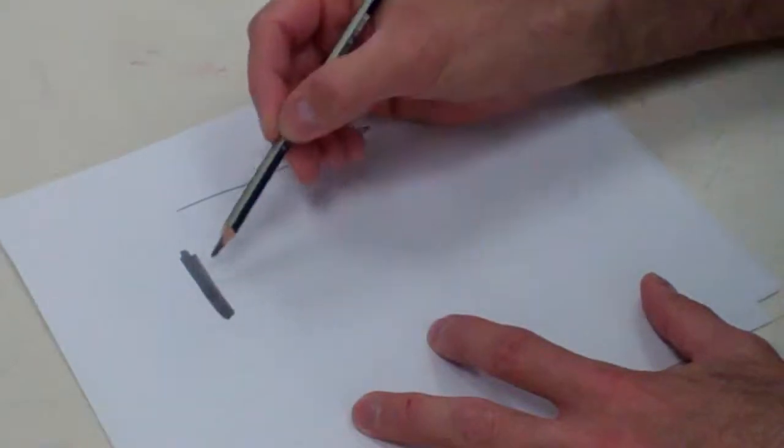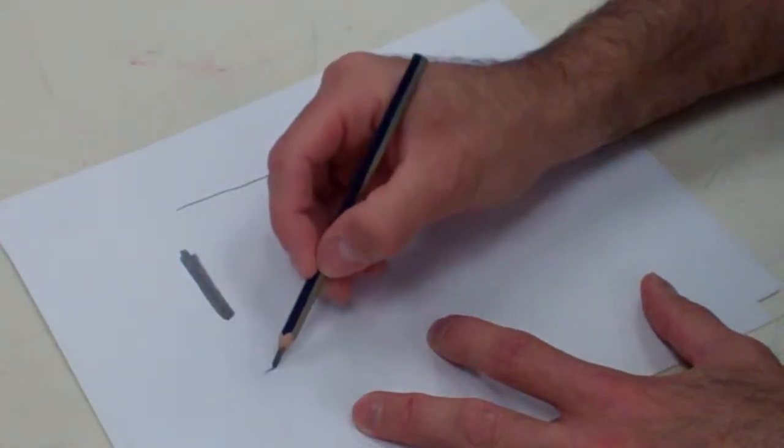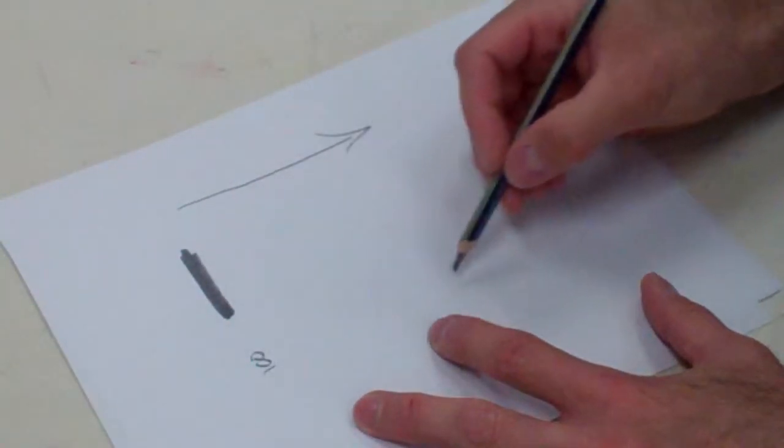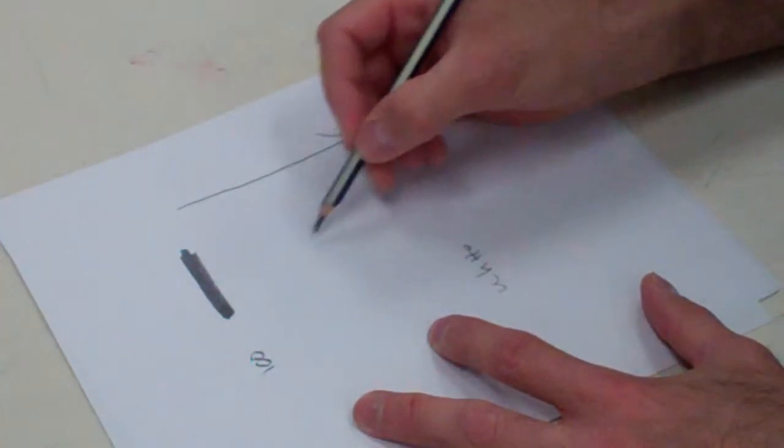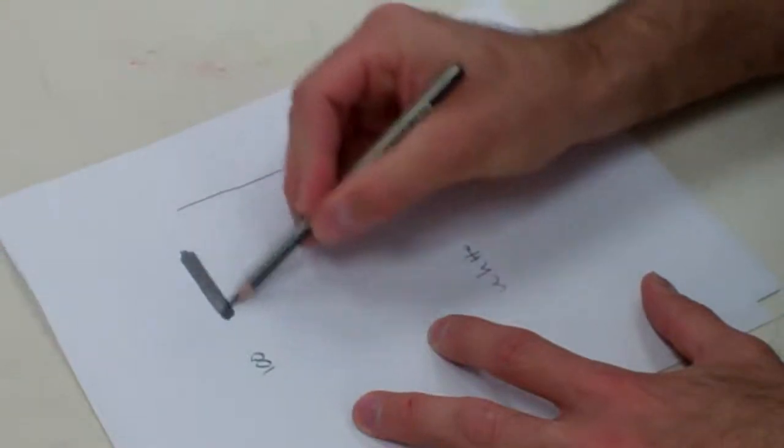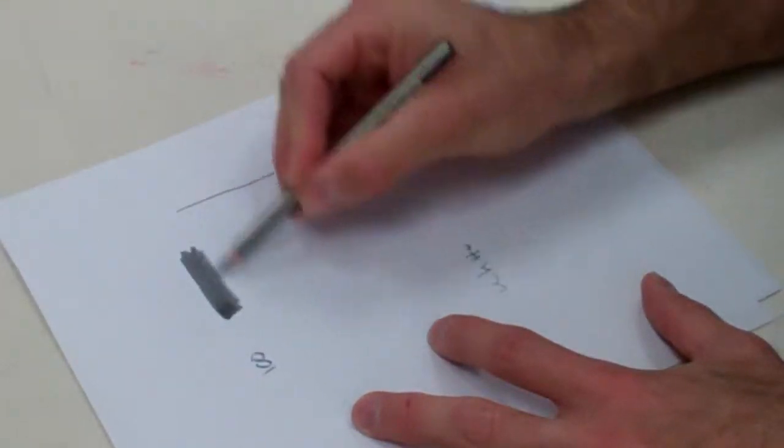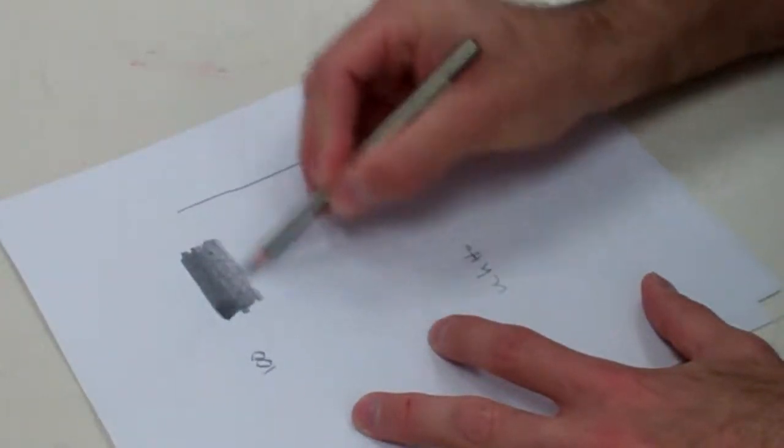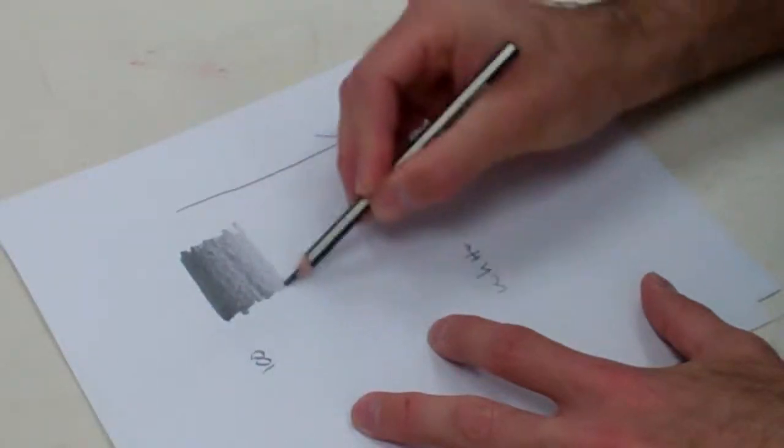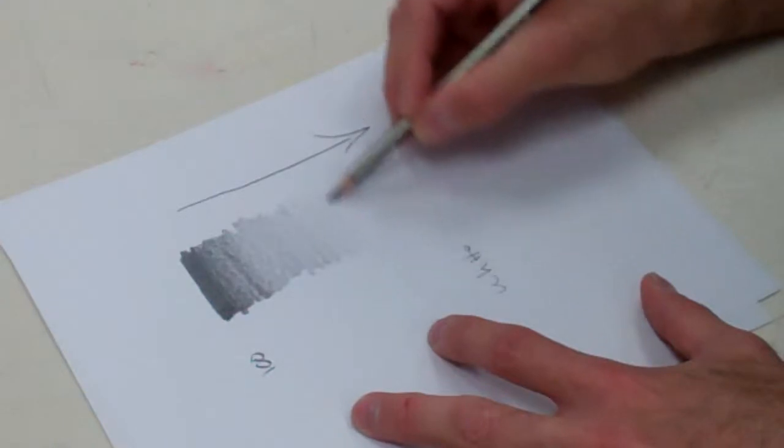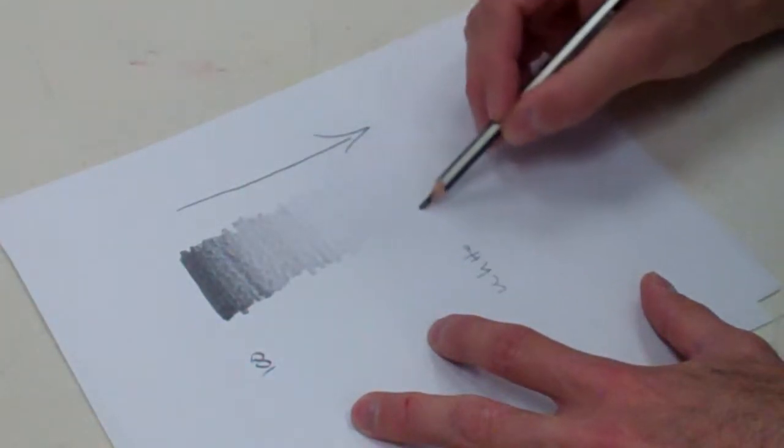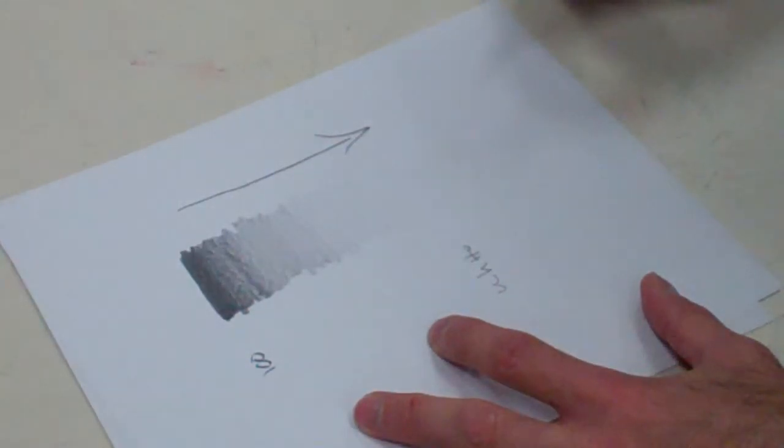So I'm going to create a simple value scale going from 100% black down to 0, which would be white, and all of the values in between. I come over here and I push down hard, and as I start to go in this direction, I start to take pressure off of my pencil. I'm using the same pencil to create that value scale. Notice what's happening as I take it away—there's almost no pressure being on the pencil.